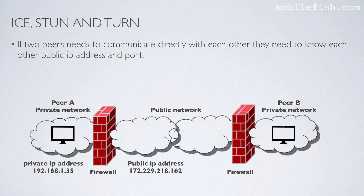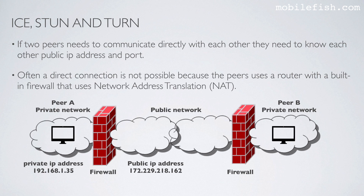If two peers need to communicate directly with each other, they need to know each other's public IP address and port. Often a direct connection is not possible because the peers use a router with a built-in firewall that uses network address translation.